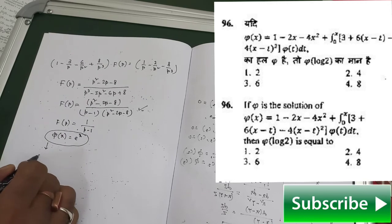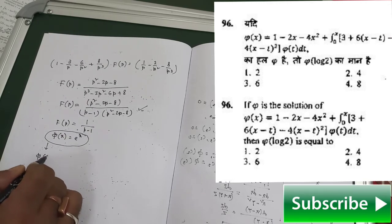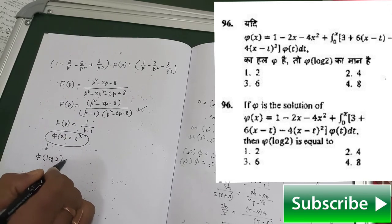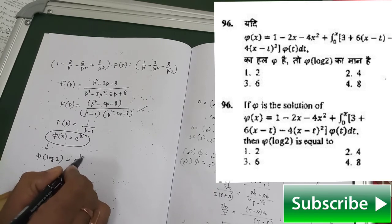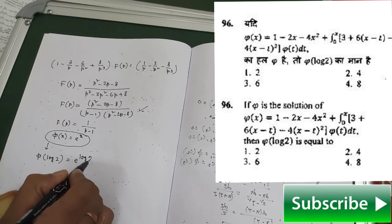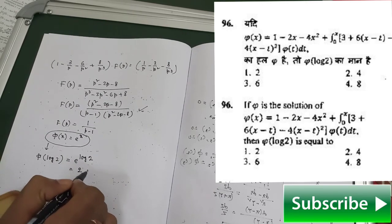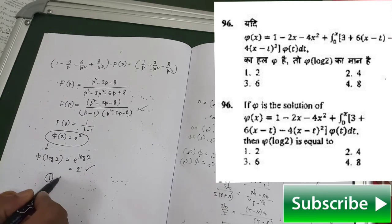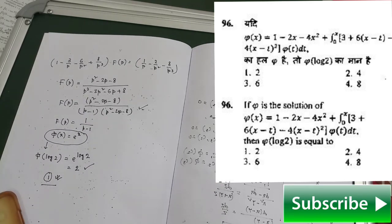Now they have asked what is φ(log 2). So it will be e^(log 2), which equals 2. Your first option is correct and we obtained it in a very easy manner.